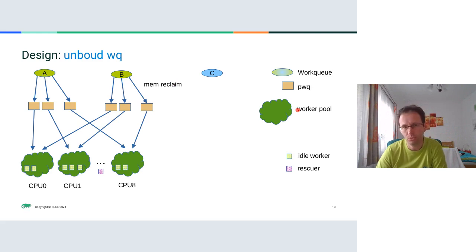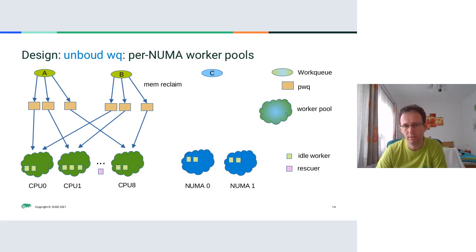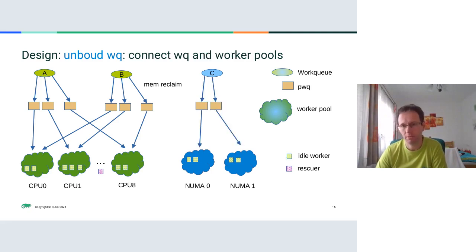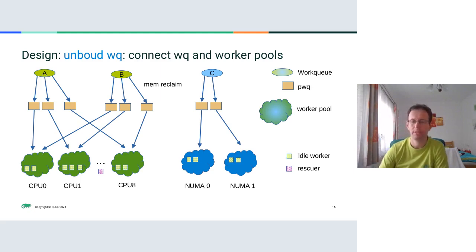Another type is the unbound workqueue, which won't process work on the same CPU where it was queued, but it's not fully random — it still processes work items on the same NUMA node. So it may use more worker pools if there are multiple NUMA nodes on the system, and again the workqueue structure is connected to worker pools via the pwq structure.